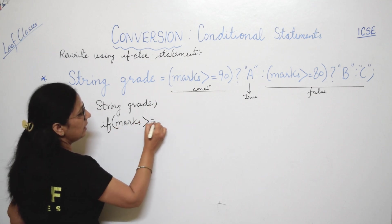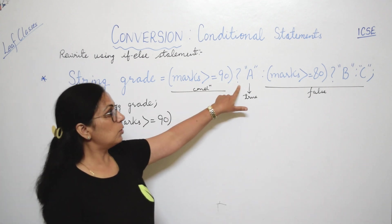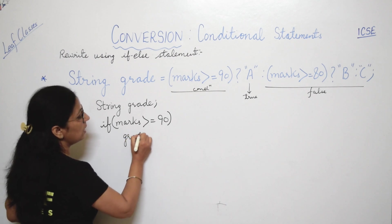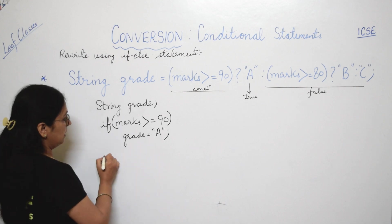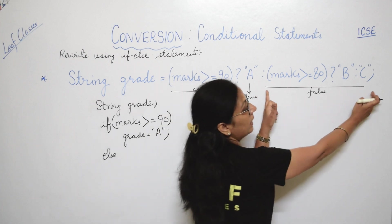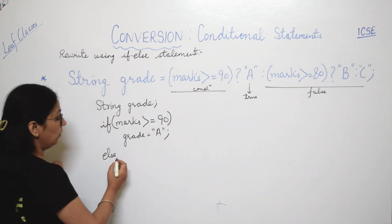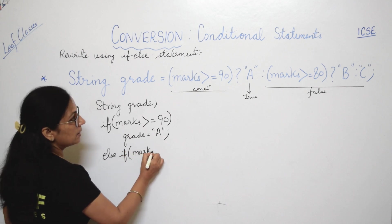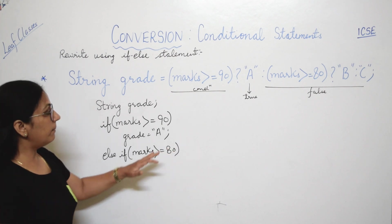Marks greater than equals to 90. Now if this condition is true, question mark ke baad kya hai? A. That means grade is equals to A. Grade ki value ho gayi A. Else, if this is false, agar yeh false hai, then again one ternary operator is used here. That means again we have to use one if. Else if, the second condition: marks greater than equals to 80.